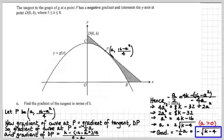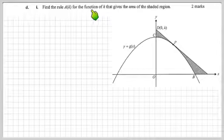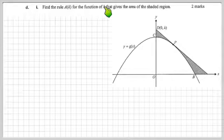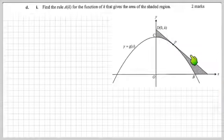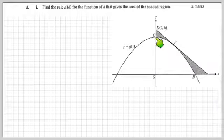Now we've got to find the rule A(k) for the function of k that gives the area of the shaded region. We've got the gradient in terms of k. To work out the area of the triangle, I need the base — I've already got the height k. Using gradient = rise over run, where the rise is k and the run is OE, I can get OE as the base of the triangle. Then I subtract the previously determined area under the quadratic between the x and y axes.